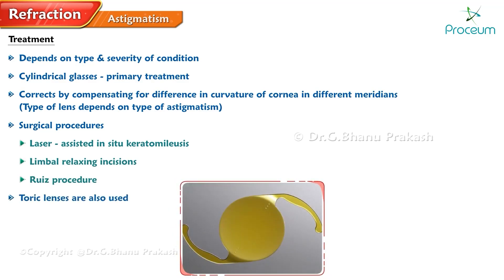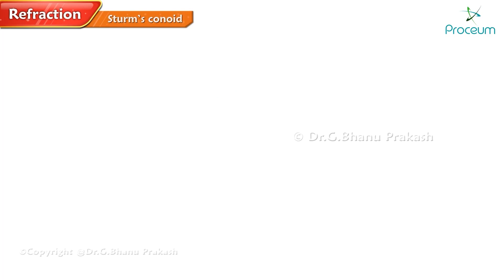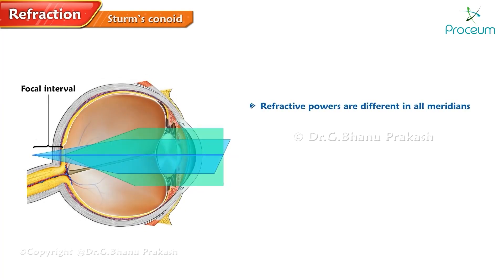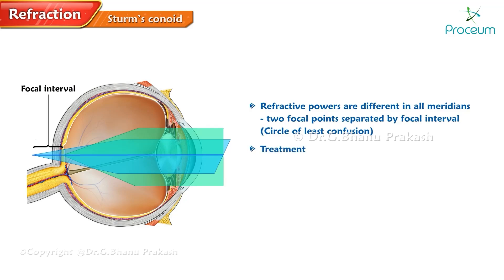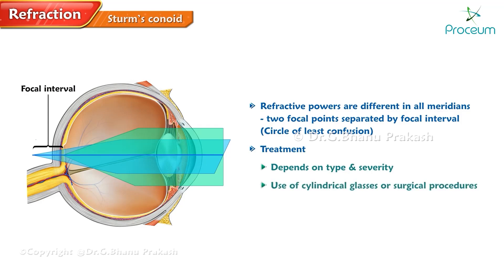Toric lenses are also used to treat astigmatism. Sturm's conoid is a condition where the refractive powers are different in all meridians, resulting in two focal points separated by a focal interval, or circle of least confusion. Treatment depends on the type and severity and can include cylindrical glasses or surgical procedures.